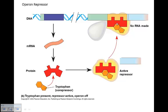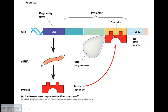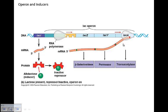When the co-repressor binds to the DNA, the RNA polymerase doesn't work anymore — no RNA is made. You can have an active repressor that acts as an off switch. It fits into the operator, the RNA polymerase is no longer active, can't get past it, and so no RNA is made. The repressors are the off switch.